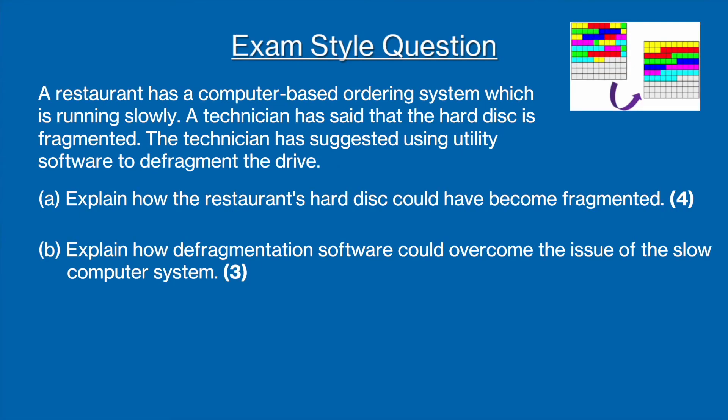As the concept of the defragmentation utility can be a bit tricky to grasp, let's have a go at an exam style question. A restaurant has a computer-based ordering system which is running slowly. A technician has said that the hard disk is fragmented and has suggested using utility software to defragment the drive. Part A wants us to explain how the restaurant's hard disk could have become fragmented, and part B wants us to explain how defragmentation software could overcome the issue of the slow computer system.